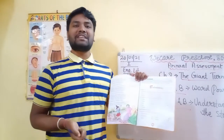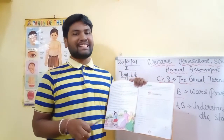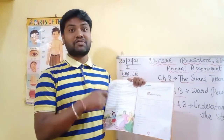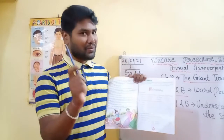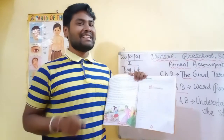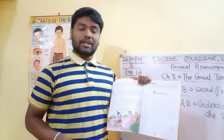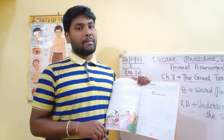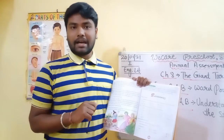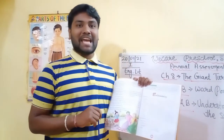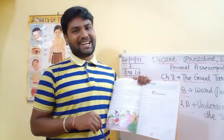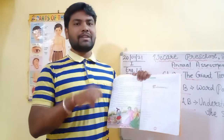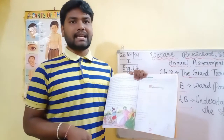Good morning, this is Weekend Preschool Senior Online Class. I am Ushurha Sir. This is the class for Standard 1 students, subject is English Literature. Children, what did you do last time? We did word power and explained the chapter — it was a very interesting story. Today we will start the exercises.